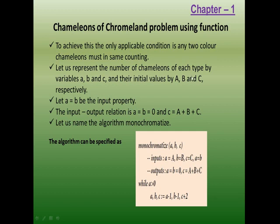The output relation is: at the end, A equal to B equal to 0. That means all chameleons in the first and second group will be 0, and the third count will automatically be the summation of all three numbers. This is the end result. The condition is: if A and B each decrease by 1, then C has to increase by 2.